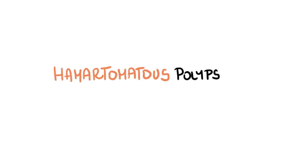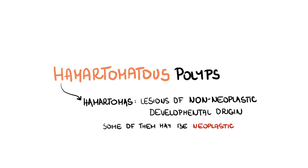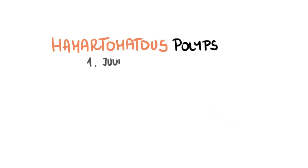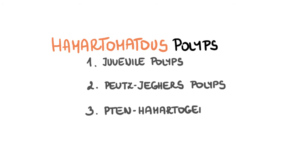Hamartomatous polyps were considered to be hamartomas — lesions of non-neoplastic developmental origin. At present, we assume that at least some of them may be neoplastic. They may appear sporadically or as part of hamartomatous polyposis syndromes, with a risk of malignant transformation. The most common are juvenile polyps, Peutz-Jeghers polyps, and PTEN hamartomatous polyps.